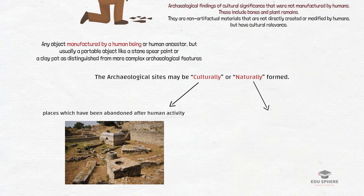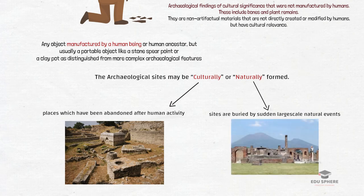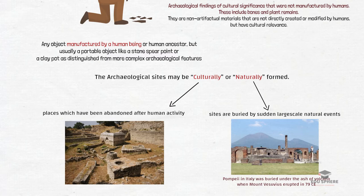In the case of natural formation, sites are buried by sudden large-scale natural events. For example, the city of Pompeii in Italy was buried under the ash of a volcano when Mount Vesuvius erupted in 79 CE. This buried city was preserved under the volcanic ash. Similarly, extremely cold conditions such as those in the Alps or the Arctic, or extremely dry conditions like those in deserts, also preserve organic materials.